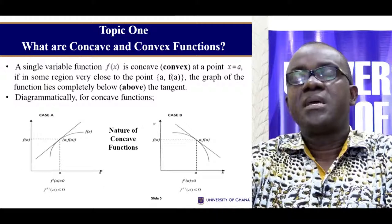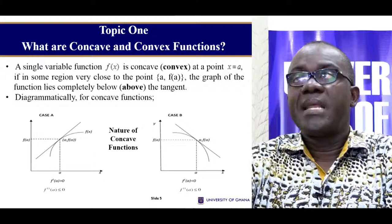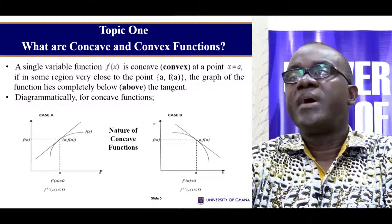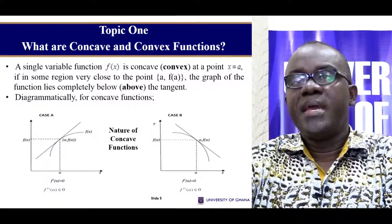For a single variable function f of x, it is concave or convex at a point x if in some region very close to that point, the graph of that function lies completely below — or above in the case of convex — the tangent.